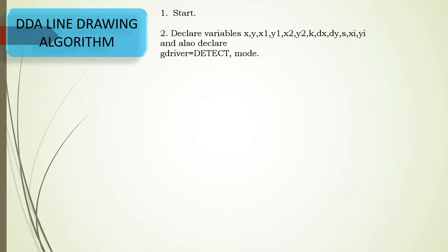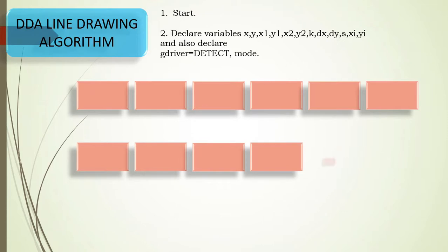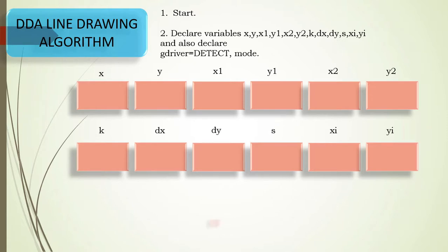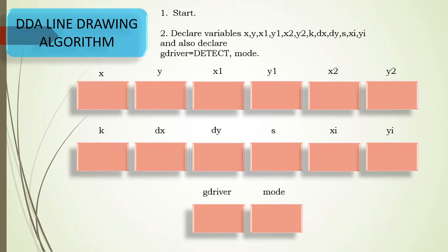The first step is to declare the required variables: x, y, x1, y1, x2, y2, k, dx, dy, s, xi, yi, and also graphics driver and graphics mode. Here, dx and dy represent the differential of x and differential of y. s is the number of steps, xi and yi are the incremented values, x1 and y1 are the starting point, and x2 and y2 are the ending point of our line.